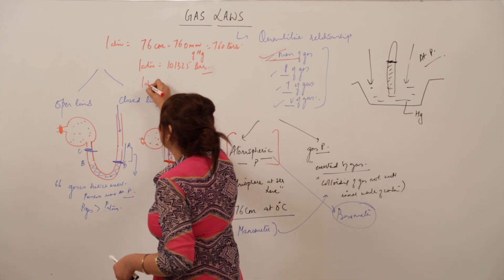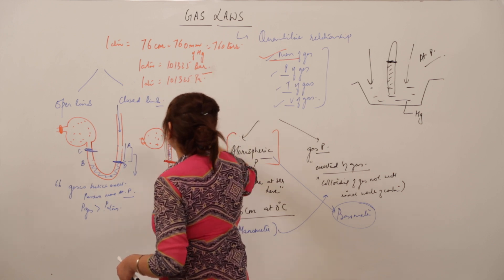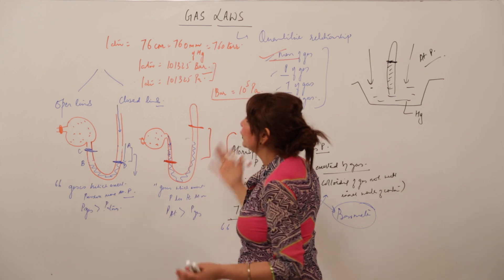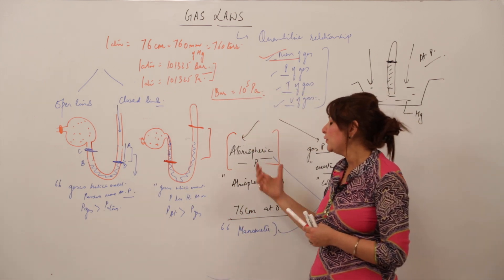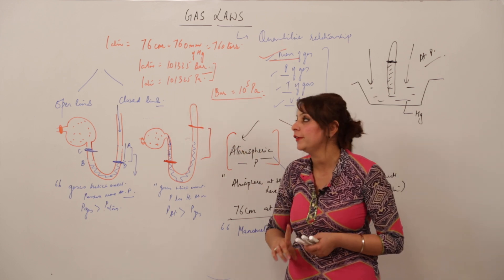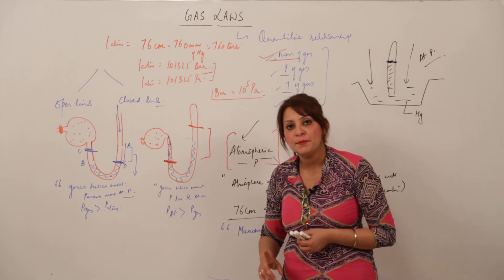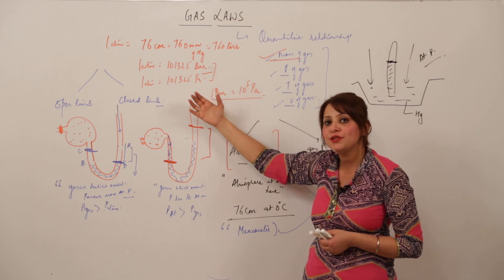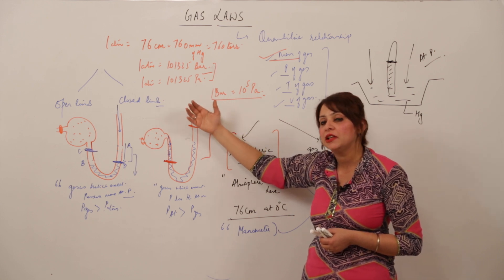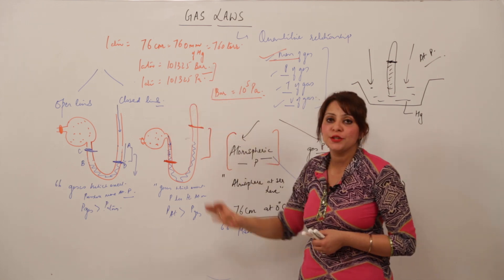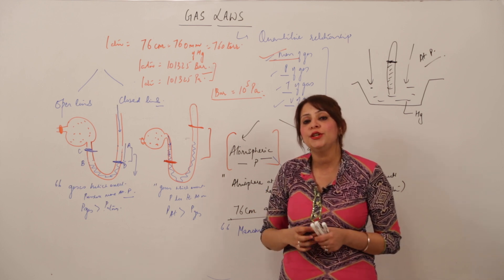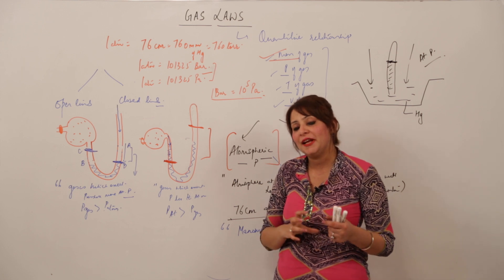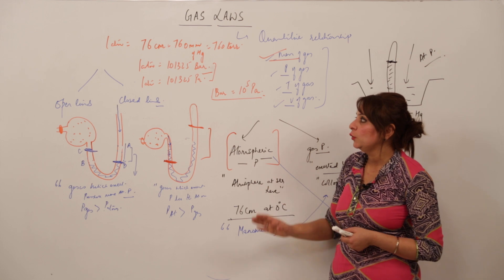One atmosphere is also equal to 1.01325 bar, or 101325 Pascal. The relation between Pascal and bar is that 1 bar equals 10^5 Pascal. So atmospheric pressure can be expressed in atmosphere, cmHg, mmHg, torr, bar, or Pascal. To convert between units, you need to know these relations and apply the appropriate multiplication or division.